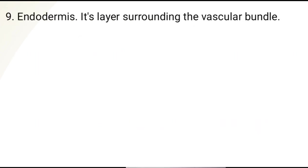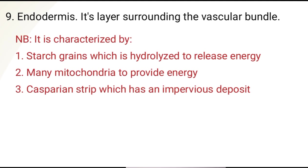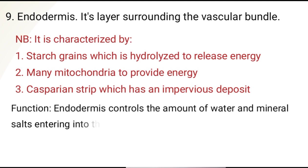Number nine, endodermis. It is a layer surrounding the vascular bundle. It is characterized by: number one, starch grains that are hydrolyzed to release energy; number two, many mitochondria to provide energy; and the Casparian strip, which has an impervious deposit. The function of the endodermis is to control the amount of water and mineral salts entering into the vascular bundle.